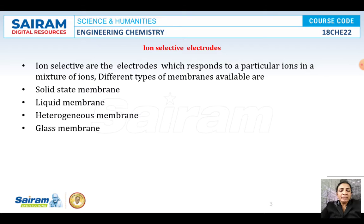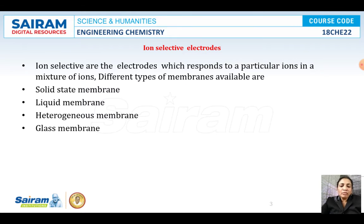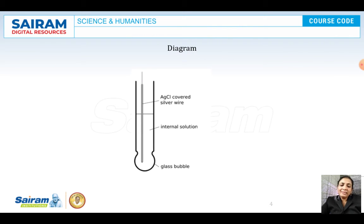In our syllabus, we focus on the glass electrode, where the membrane is made by using a special quality glass. These are the different types of membranes available in ion selective electrodes, which respond to particular ions in a mixture of ions. Let us now see the diagram of the glass electrode.